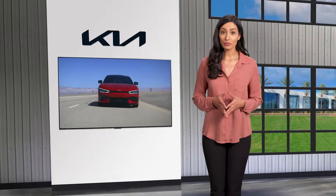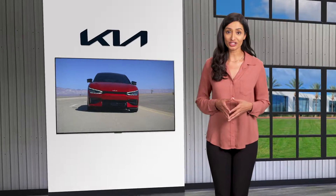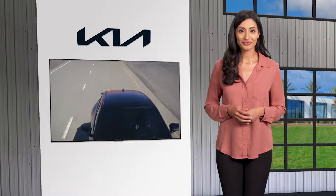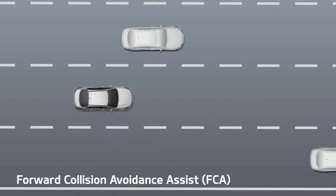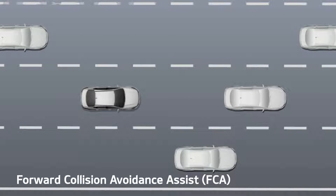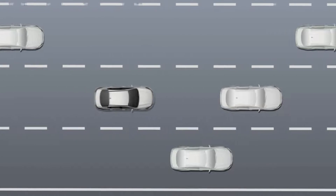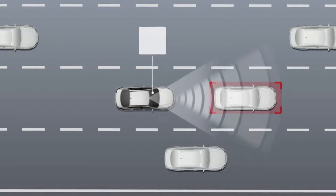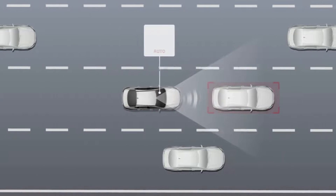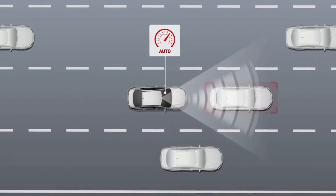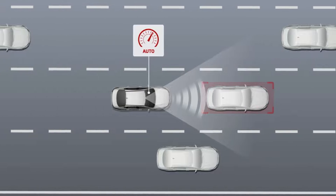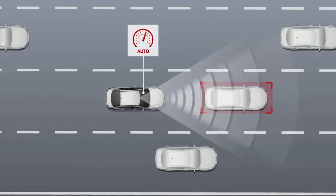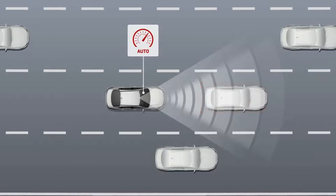Select Kia models come with Forward Collision Avoidance Assist. Here's how it works. Forward Collision Avoidance Assist, or FCA, uses a forward-facing camera and, if equipped, radar sensors to help detect and monitor vehicles, pedestrians, and cyclists ahead and warn the driver of a possible collision.